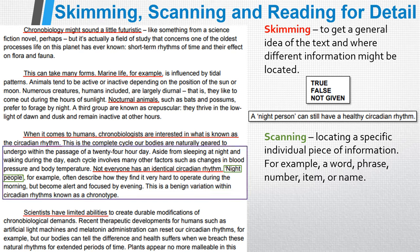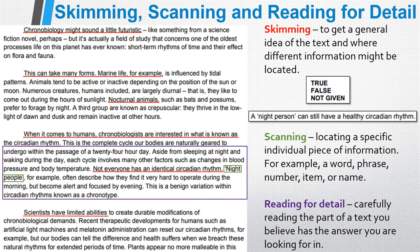Now I need to read that paragraph carefully to see what the actual answer is. I'm going to read from at least the second sentence: 'This is the complete cycle our bodies are naturally geared to undergo within the passage of a 24-hour day. Aside from sleeping at night and waking during the day, each cycle involves many other factors such as changes in blood pressure and body temperature. Not everyone has an identical circadian rhythm — night people for example often describe how they find it very hard to operate during the morning but become alert and focused by evening. This is a benign variation within circadian rhythms known as a chronotype.'